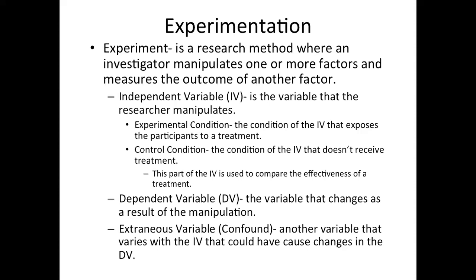The dependent variable is the outcome — it is the measured variable. After we manipulate the independent variable, we measure the dependent variable. And if there are significant differences between the experimental group and the control group, we can say whatever that factor was caused the changes to our dependent variable.